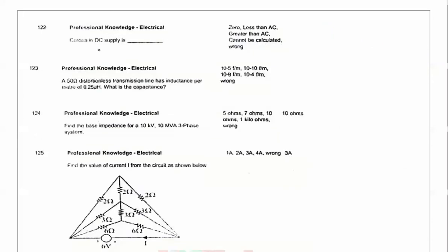Next question: Corona in DC supply. So corona losses is proportional to frequency. Corona losses Pc is proportional to f plus 25. If the frequency in DC is zero, for DC frequency this term is zero but we have some losses. So corona losses is less in DC compared to AC. Less than AC is the answer.